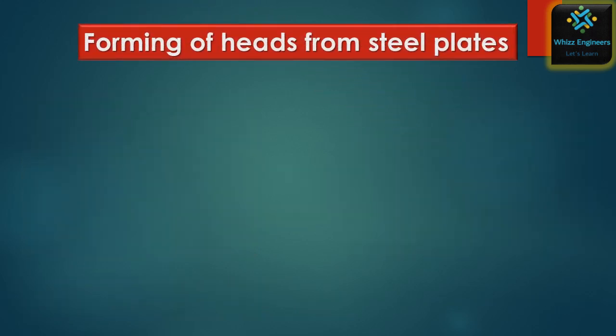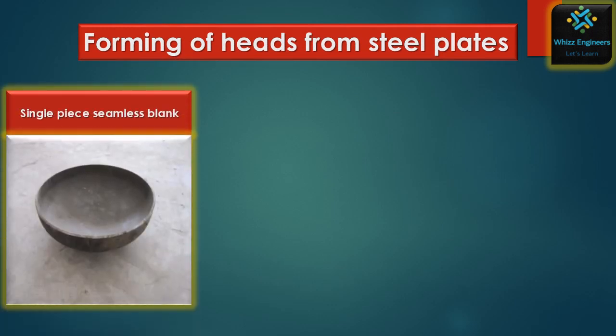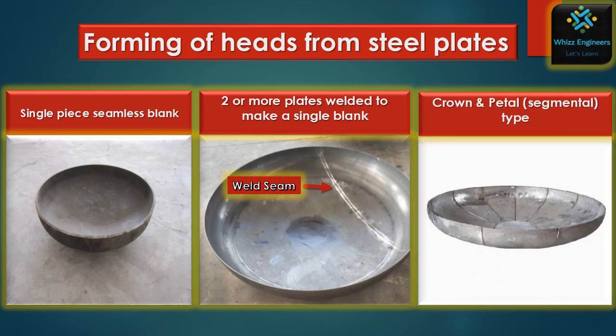These heads are formed from steel plates in one of the following ways. The first is a single piece seamless blank — if the diameter is small, it can be taken from a single plate. If the diameter is large, two or more plates can be welded to make a single blank. If the diameter is even larger, it can be made in crown and petals, or segmental type.